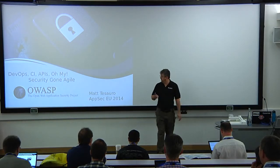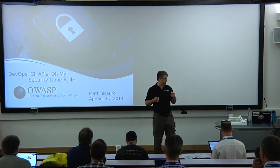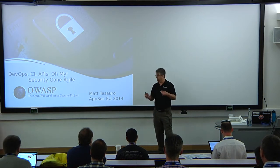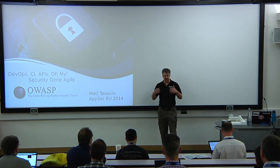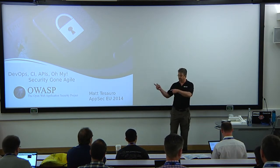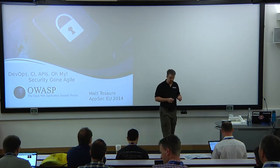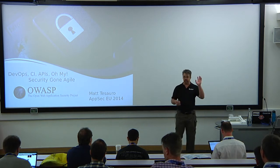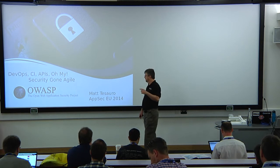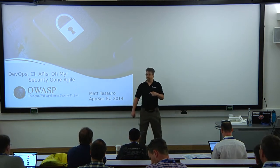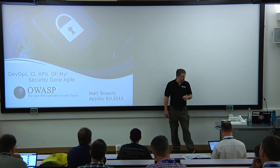Alright, well hello, welcome. This is DevOps, CIs, APIs, and my security on Agile. I'm Matt Tassaro and I will be doing this presentation. There's a bunch of stuff here. I have very information-dense slides, mostly so that if you want to look at this later, you'll have the material. I mostly just use it to remember what I wanted to talk about. As I'm going along, if you have a question, just raise your hand, shout it out, throw coins a pound or greater. So let's get started.